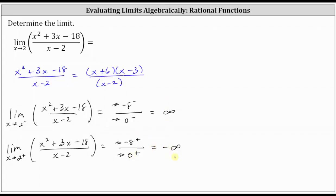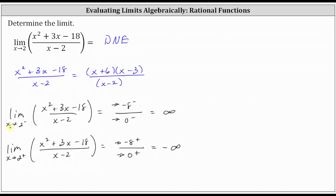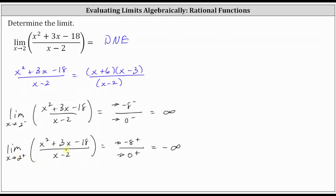So because the limits from the left and right are not approaching the same value, we now know the original limit does not exist. Let's also verify these results by looking at a table of values and the graph. Notice as we approach x equals two from the left, with values less than two, we can see the function values increase without bound and approach positive infinity. This verifies our first one-sided limit is correct. And as we approach two from the right with values greater than two, we can see the values decrease without bound and approach negative infinity, which verifies the second one-sided limit and also verifies the original limit doesn't exist.